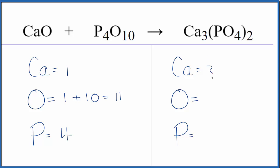On the product side, we have three calcium, and this two here goes to everything in the parentheses. So two times four, that's eight oxygen atoms; two times one gives us two phosphorus atoms.